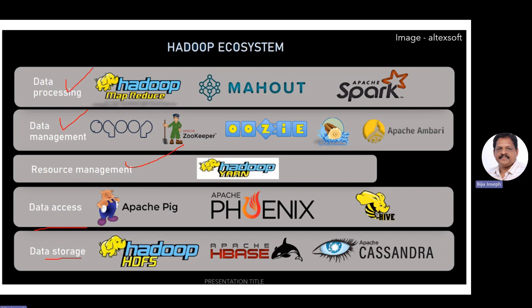Just focus on data storage. Hadoop HDFS — already mentioned — this is the Hadoop Distributed File System, and everything is based on this data storage. We also have Apache HBase and Apache Cassandra. So as soon as you think about the Hadoop ecosystem from a storage point of view, think Hadoop HDFS, HBase and Cassandra.